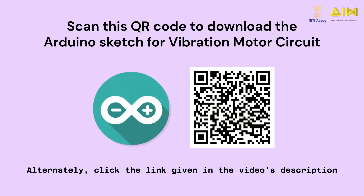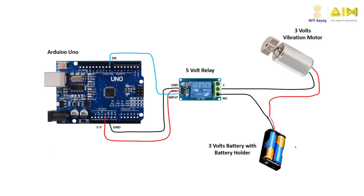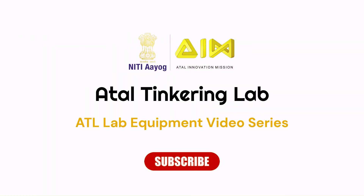Scan this QR code to download the Arduino sketch for the vibration motor circuit and upload it to the Arduino board. Once the Arduino board is powered on, you will notice that the vibration motor rotates for 5 seconds and then turns off for the next 5 seconds. The process of the vibration motor turning on and off continues as long as the circuit is powered on. Hope you learned something new today. Thank you for watching.